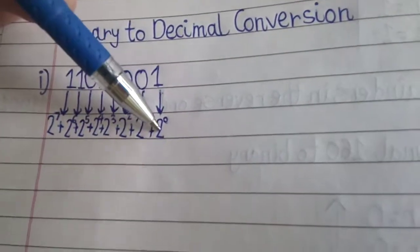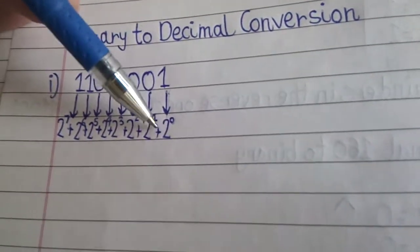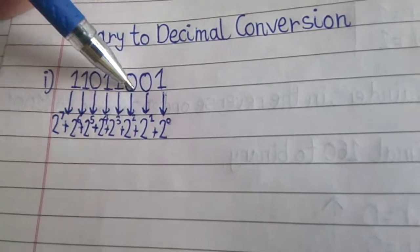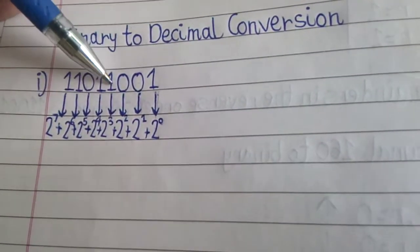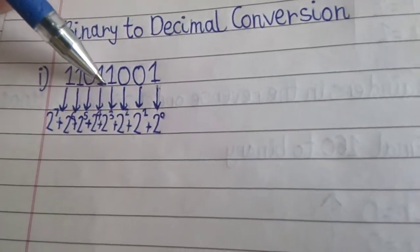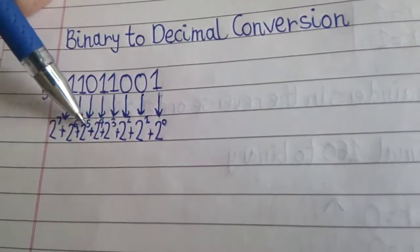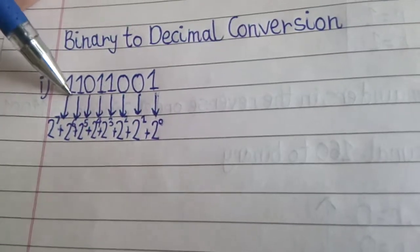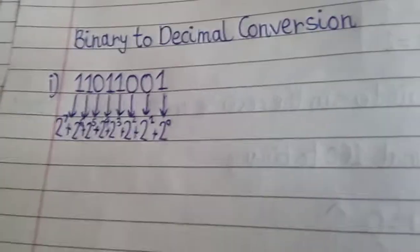For this one, it is 2 raise to 0. Plus this 0, it is 2 raise to 1. This 0, 2 square. This one, 2 cube. This one, 2 raise to 4. 0, 2 raise to 5. This one, 2 raise to 6. And the last one over here is 2 raise to 7.